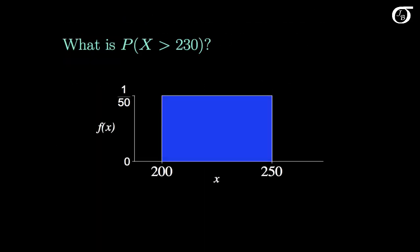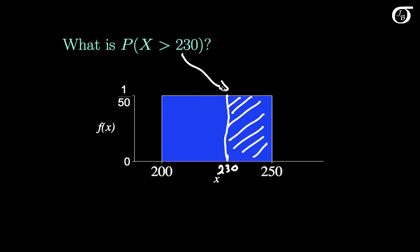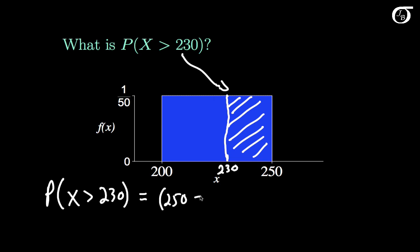What is the probability the random variable x takes on a value greater than 230? For continuous random variables, probabilities are areas under the curve. We find the area to the right of 230, which is the base of the rectangle — 250 minus 230 — times the height of 1 over 50. This works out to 20 over 50, or 0.4.